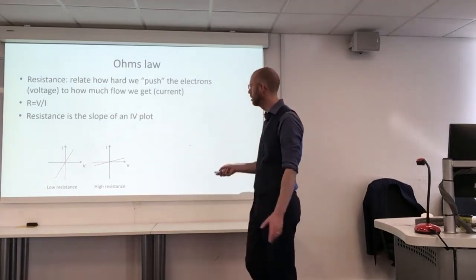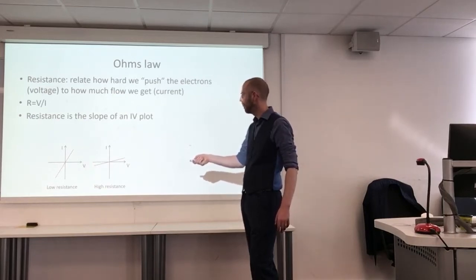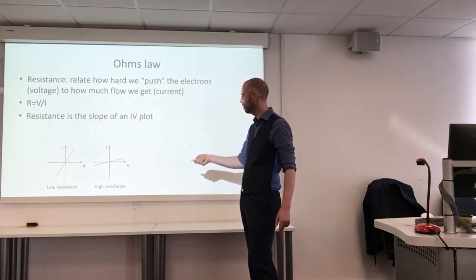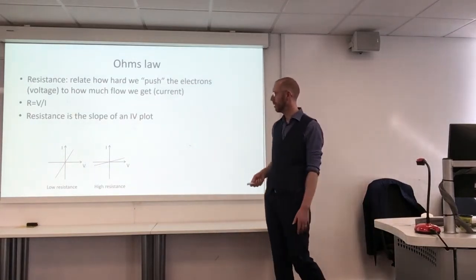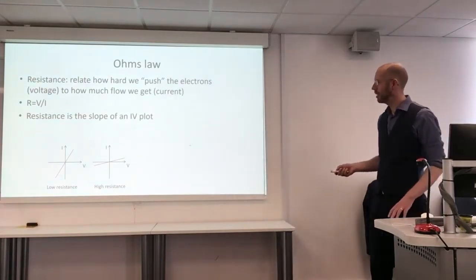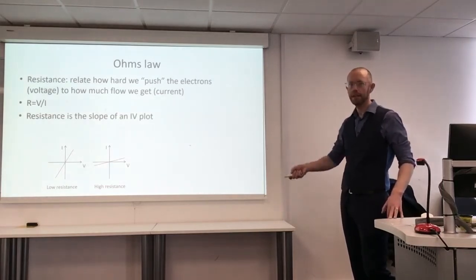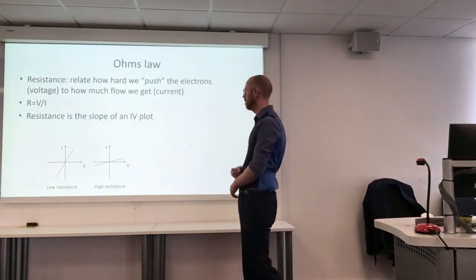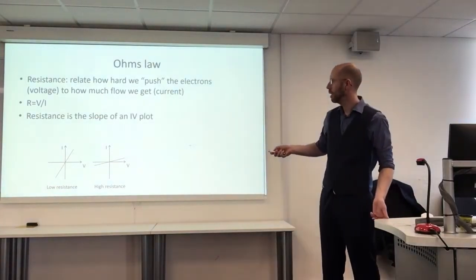Similarly, if we had a high resistance and we plotted the current against the voltage, we'd start at a negative voltage and get a relatively small negative current flowing. Then we'd get to zero voltage, expect zero current, and as we increase the voltage we get a small positive current — that's what we expect for a high resistance. Again, picking any point along that line and dividing the voltage by the current gives exactly the same resistance. This equation is what we call Ohm's law.